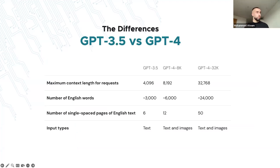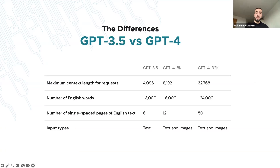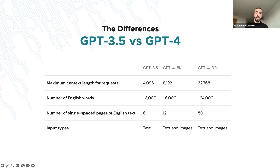A token is a unit of text representing a word, phrase, or punctuation mark. The context length is the maximum number of tokens the model can process at once. GPT-4 32K can process four times as much text as GPT-4 8K at a time, making it better suited for tasks requiring processing of large amounts of data, such as machine translation and text summarization.